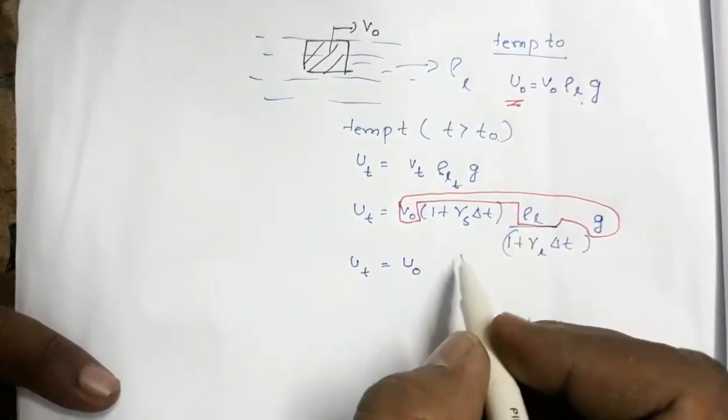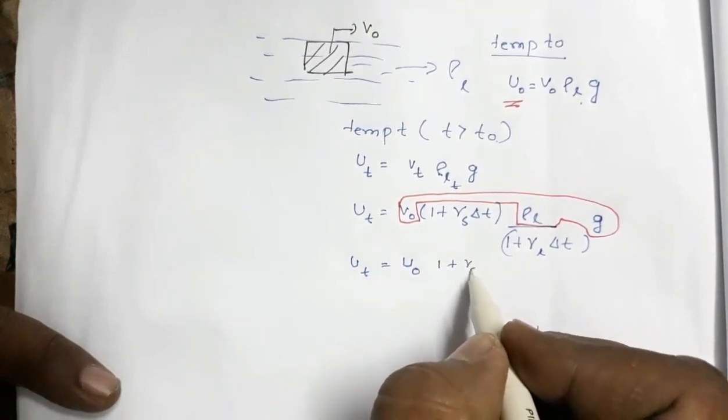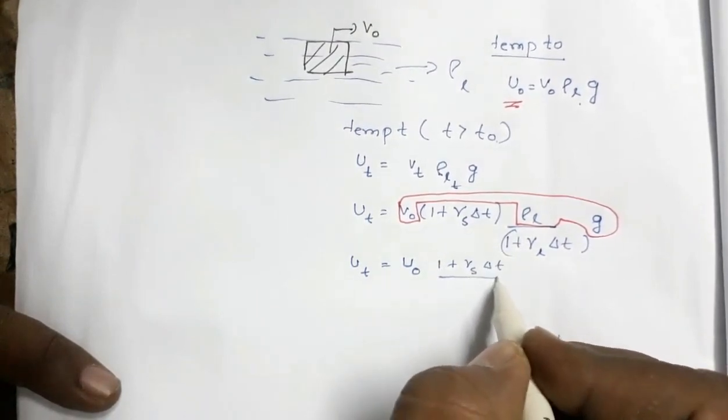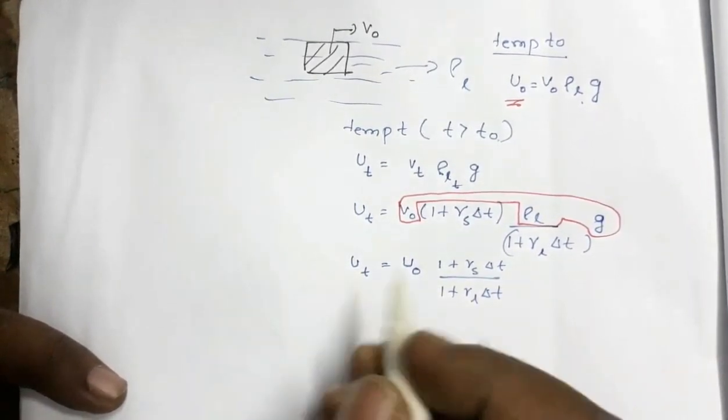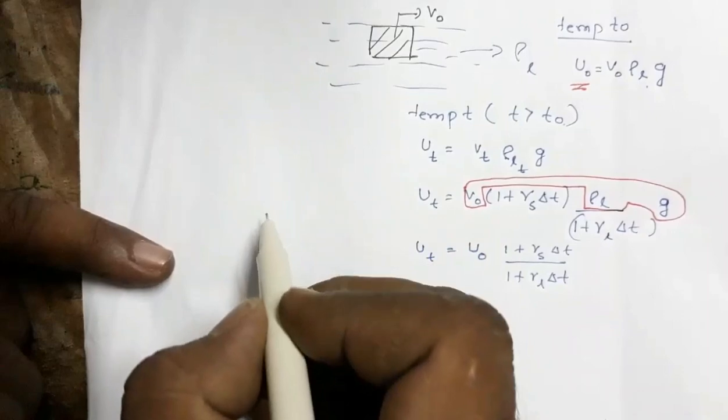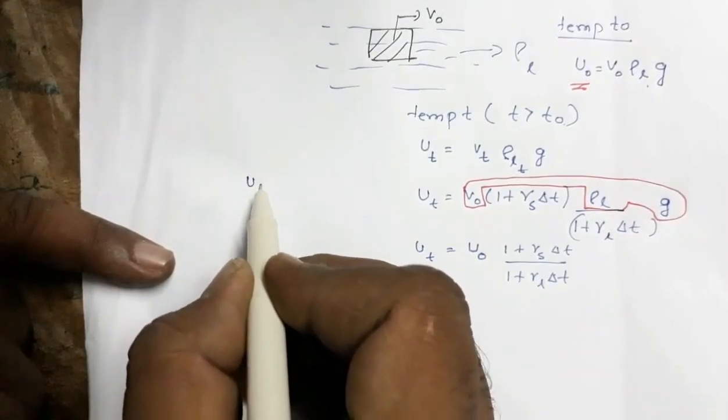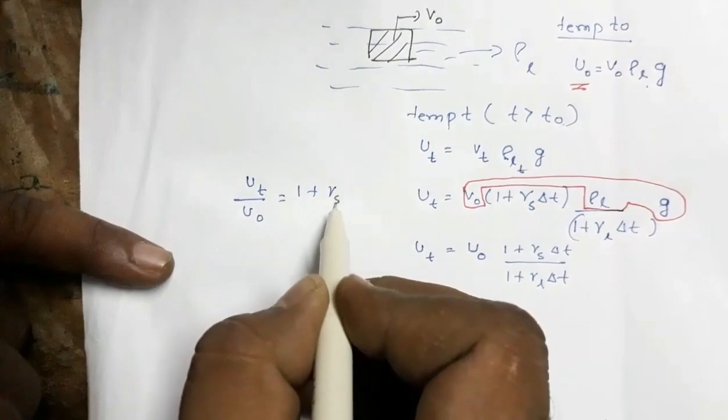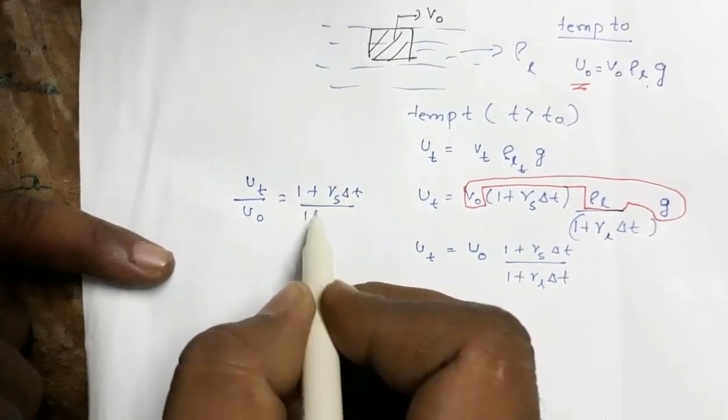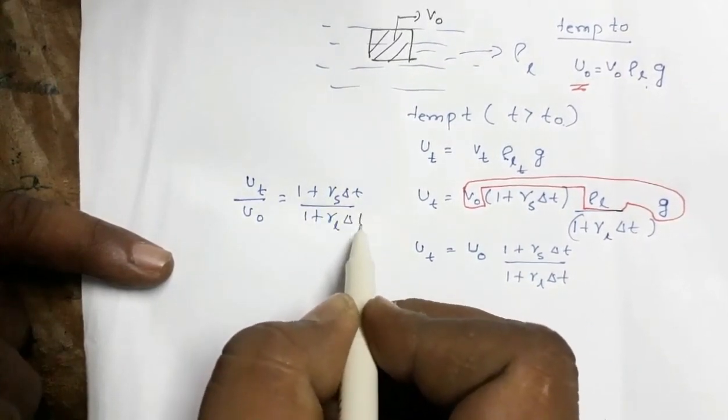So U0 times 1 plus γS delta T divided by 1 plus γL delta T. Now this is equivalent to UT by U0 is equal to 1 plus γS delta T by 1 plus γL delta T.